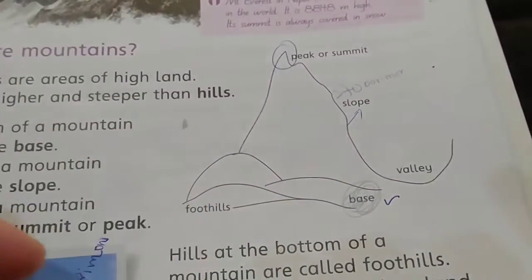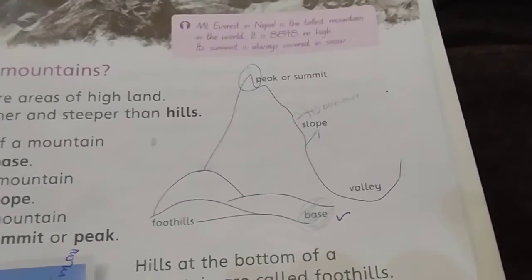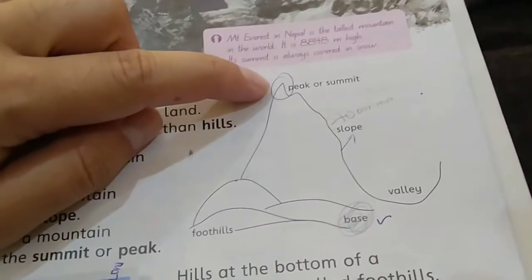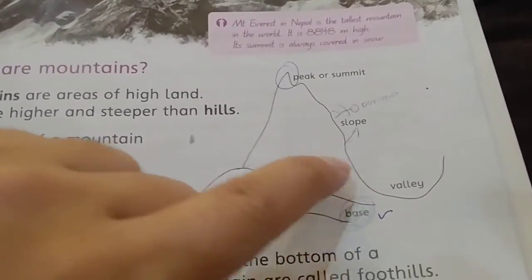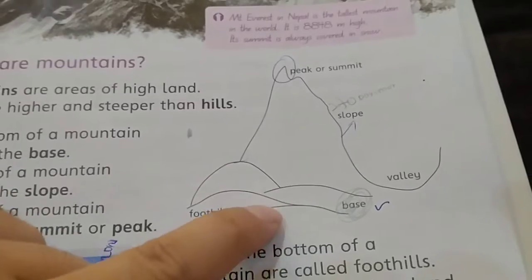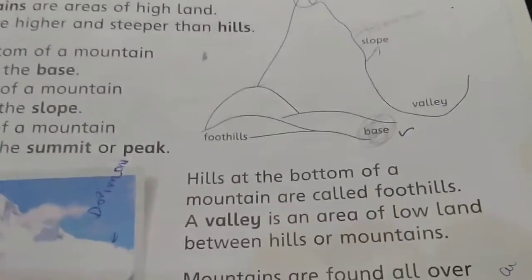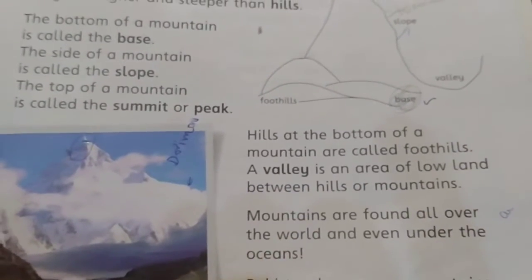The parts of a mountain are peak, slope, and foothills. The top of the mountain is called the summit or peak. The side of the mountain is called the slope. The small hills at the bottom are called foothills. How do you define a valley? A valley is an area of low land between hills or mountains.